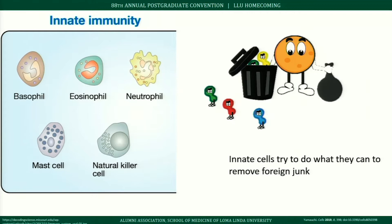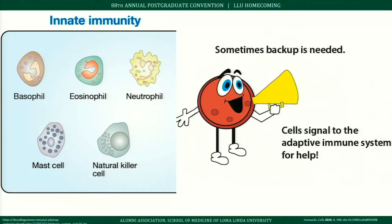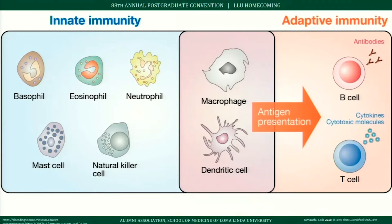The innate cells — basophils, eosinophils, neutrophils, mast cells, and NK cells — sometimes need backup, so they call on the adaptive immune system. In adaptive immunity, dendritic cells gobble up foreign material and present it as antigens, stimulating cytokine release and activating B cells and T cells.